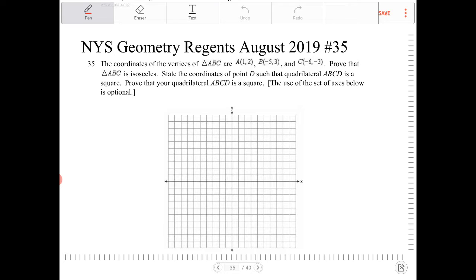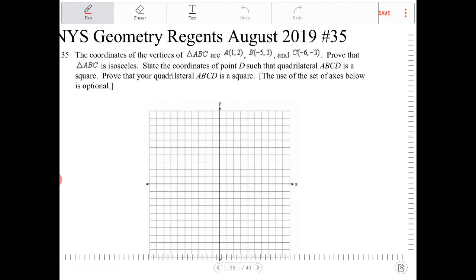Okay, so a couple of things here. There are three different parts which they are asking us to do. So let's do this one at a time. The first part here is to prove that ABC is an isosceles triangle. It says the use of the axes there is optional. I am going to use it.